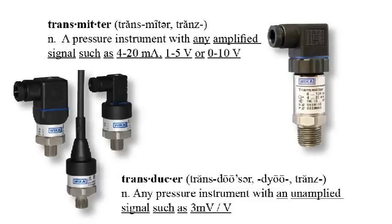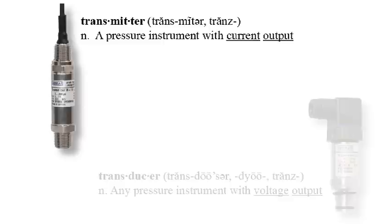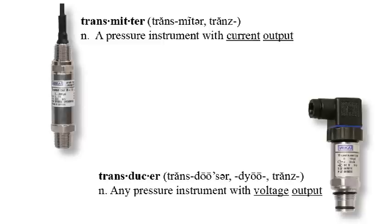Other companies define transmitters as having a current output and a transducer as having a voltage output. There are many other definitions for pressure transmitters and transducers that are commonly used. You could ask 5 different people and get 5 different answers — you could even get a different definition when asking different people within the same company.